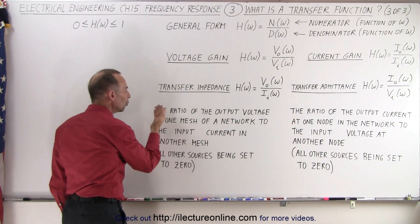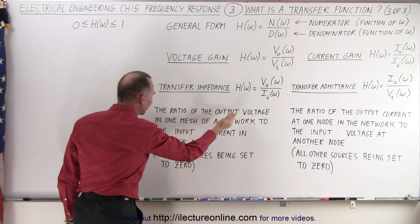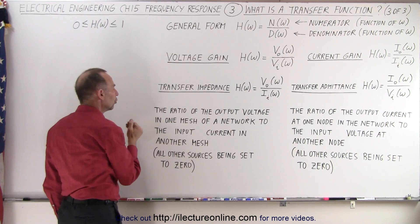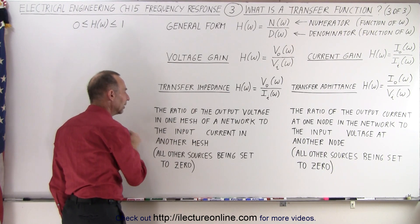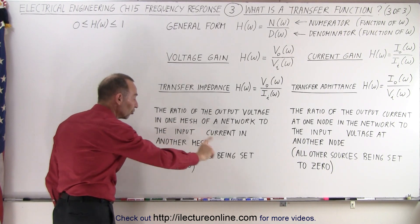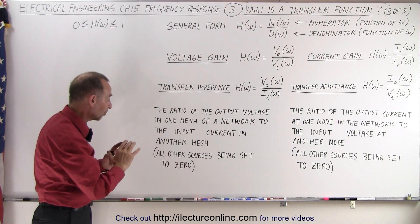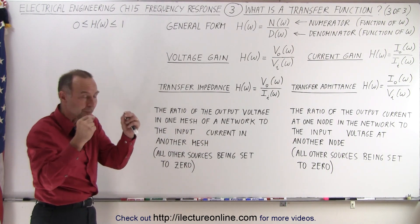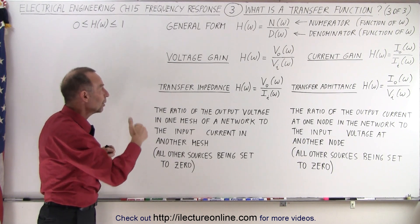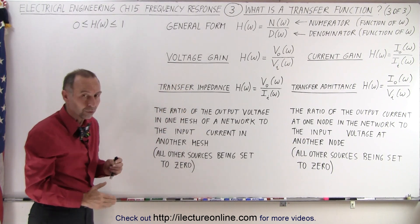In other words, the ratio of the output voltage in one mesh of the network to the input current in another mesh. Of course, understanding that we put then all other sources being set to zero, so that we can have a pure relationship between the output voltage and the input current.